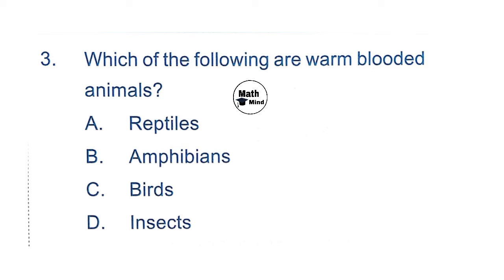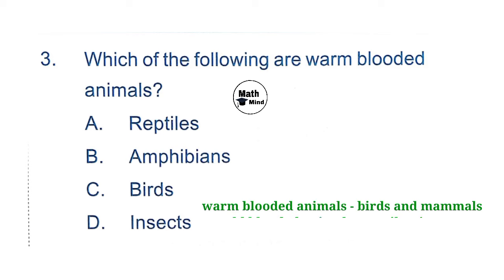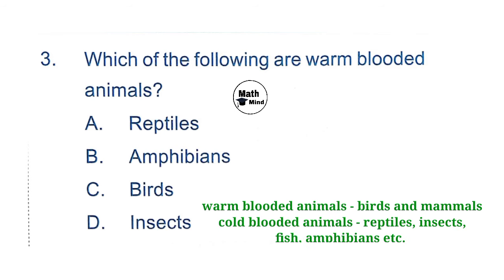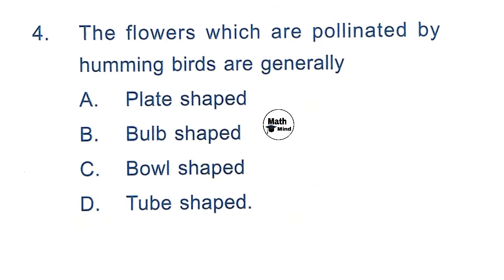Question 3: Which of the following are warm-blooded animals? Warm-blooded animals are birds and mammals, whereas cold-blooded animals are reptiles, insects, fish, amphibians, etc. Warm-blooded animals can regulate and maintain their entire body temperature; they can survive in different temperature ranges. So option C is correct: birds.